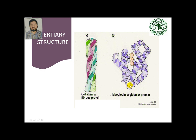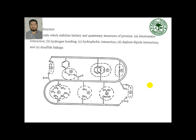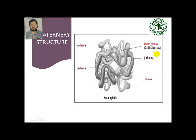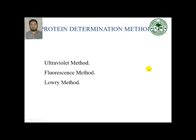Now moving to the quaternary structure: the best example is hemoglobin, which we have in abundance in our body. For quaternary structure, it is obligatory to have more than one polypeptide chain. I will skip the detailed interactions — hydrogen bonding, electrostatic, hydrophobic, dipole interactions, and disulfide — and move on quickly.